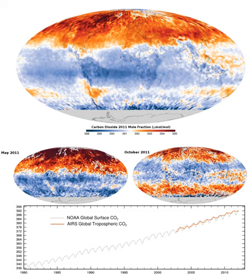The daily average concentration of atmospheric CO2 at Mauna Loa Observatory first exceeded 400 ppm on 10 May 2013, although this concentration had already been reached in the Arctic in June 2012. It currently constitutes about 0.041% by volume of the atmosphere, equal to 410 ppm, which corresponds to approximately 3,200 billion metric tons of CO2, containing approximately 870 billion metric tons of carbon. Each part per million by volume of CO2 represents approximately 2.13 billion metric tons of carbon.